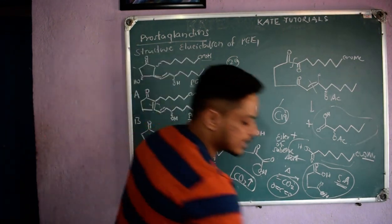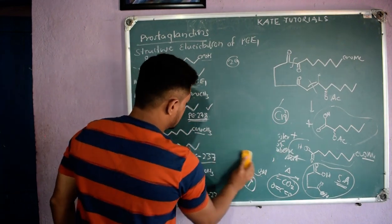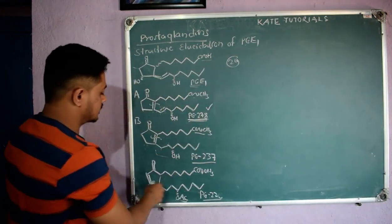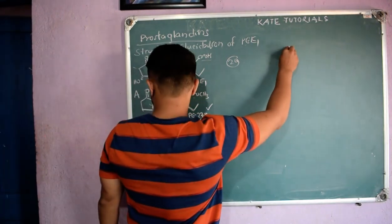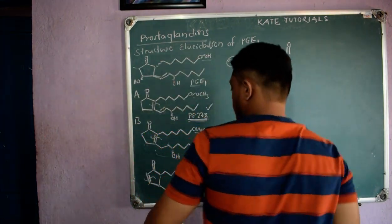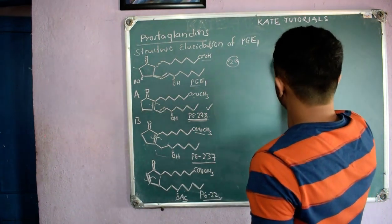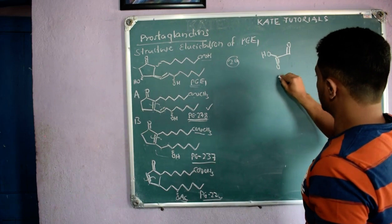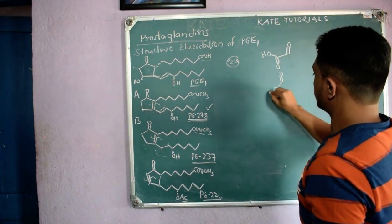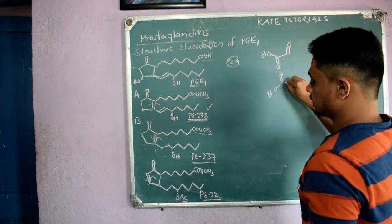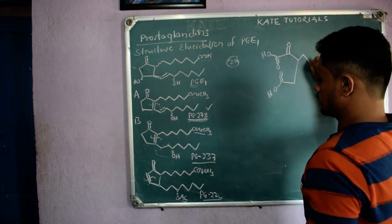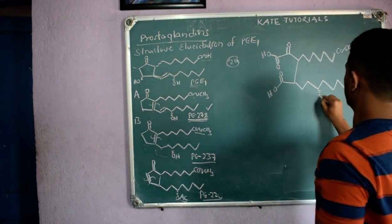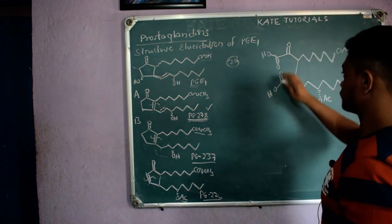We studied ozonolysis for PG237 and PG278. Now only PG220 is left. For PG220, there is only one pi bond, so that will be broken. I get C=O here; since H is present but with the oxidizing agent it becomes COOH. Again on the other side C=O, and with the oxidizing agent it becomes COOH. Other things remain the same: COOMe and OAc.